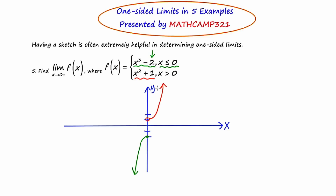Here is our graph. They want us to find the limit of this piecewise function as x approaches 0 from the right. This means approach 0 from the right. So here is 0 right here, and if we jump to the right, we're going to land on the red curve — the x squared plus 1 piece. We jump up along the red curve and then re-approach the value 0. The y values are dropping and dropping. If you guessed 1, because this parabola is 1 unit up, then you're correct. The answer to this limit question is 1.